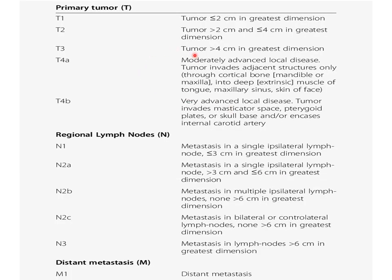TNM classification: T staging is based on size — up to 2 cm is T1, 2 to 4 cm is T2, greater than 4 cm is T3, and involvement of surrounding structures is T4. For lymph nodes: less than 3 cm is N1, 3 to 6 cm is N2, and more than 6 cm is N3. Depending on ipsilateral, contralateral, or bilateral involvement, N2 is further classified into N2B and N2C. M denotes distant metastasis.